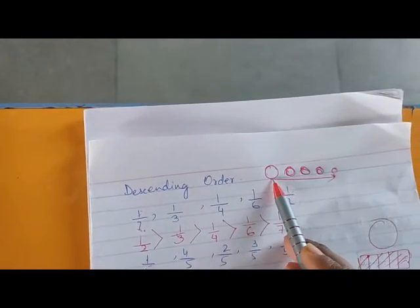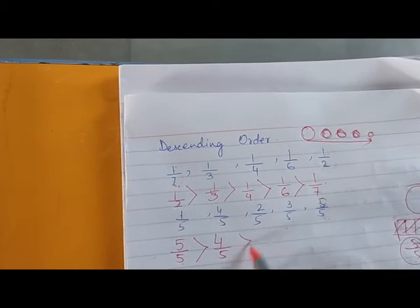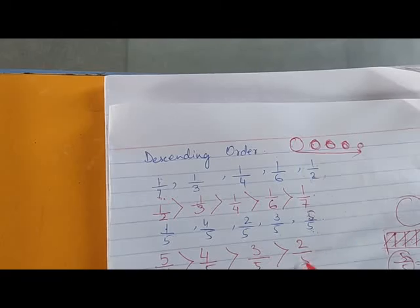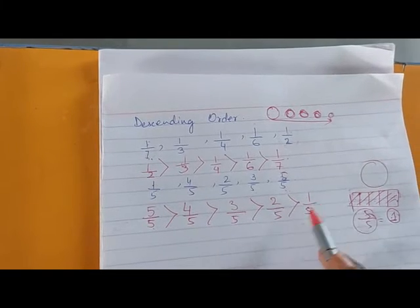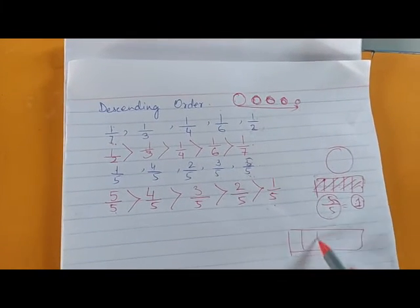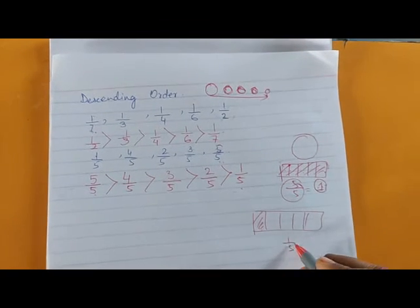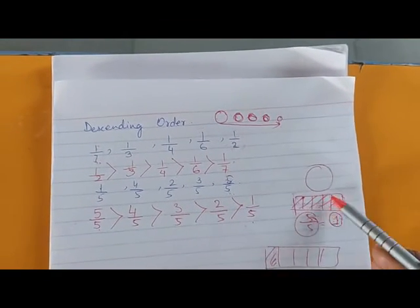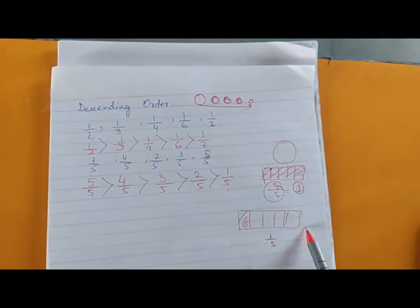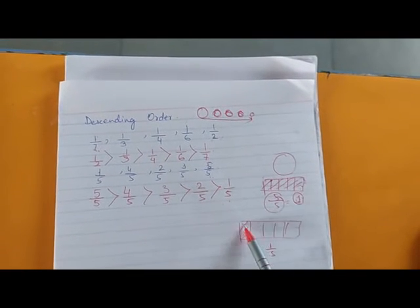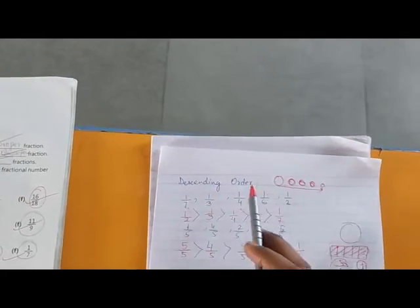We have to arrange from largest to smallest — bara se chota. So 5 upon 5 is the largest, then 4 upon 5, then 3 upon 5, then 2 upon 5, and the smallest is 1 upon 5. With 5 parts you have taken all 5 — you ate the whole cake — and here with 5 parts you have taken only one piece, so obviously 1 upon 5 is the smallest.